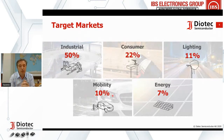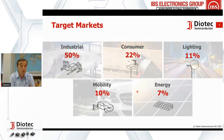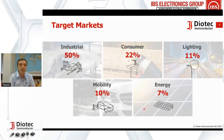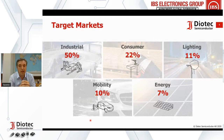Mobility is changing totally — not only the evolution of traditional cars with electronics now state-of-the-art, but also the big shift to hybrid cars and electric vehicles. We have 10% of our market in this segment with clients like Valeo, Volkswagen, and Mercedes-Benz. Last but not least, energy — DioTec is a leader with unique solutions here, serving clients like Siemens and Landis & Gyr for smart meters.